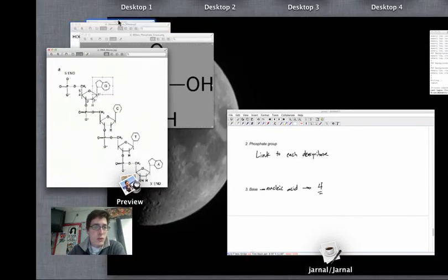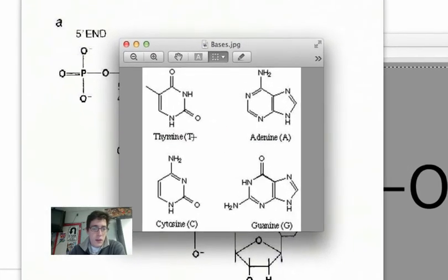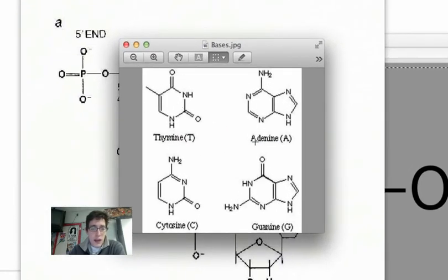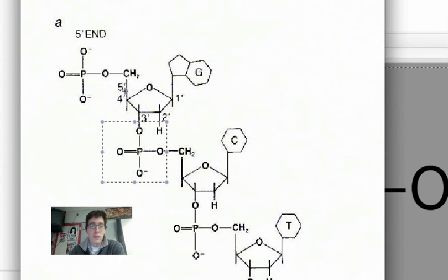A bigger view of the bases is right here. So here's the thymine, the adenine, the guanine, and the cytosine. Each of these can dehydrate into a ribose, and then the riboses dehydrate with a phosphate group to connect each other. And again, this carries hereditary information.